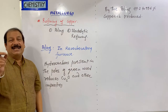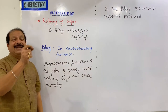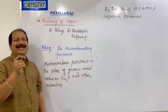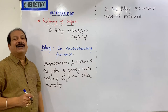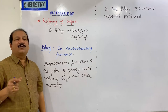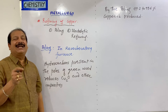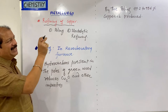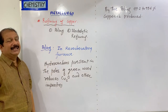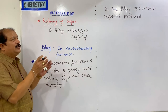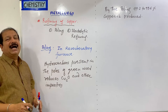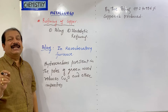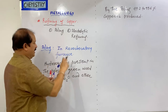Now we need 99.99% purity — we call it five nines: 99.999%. So since poling only gives us 99.6%, we need to do more. That is why we will now do electrolytic refining.